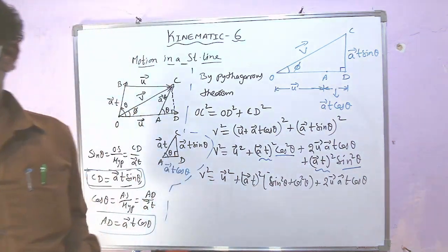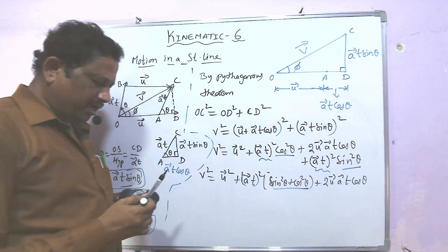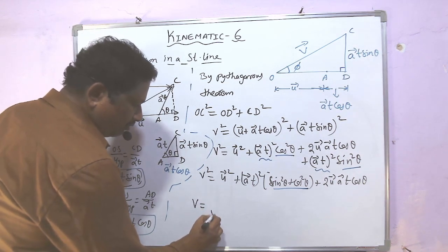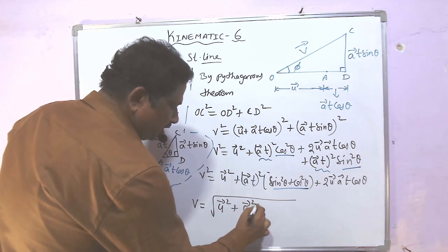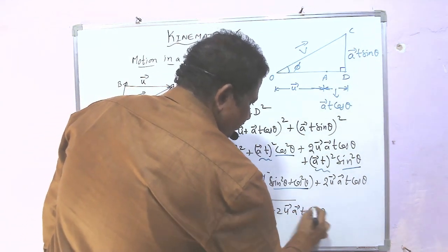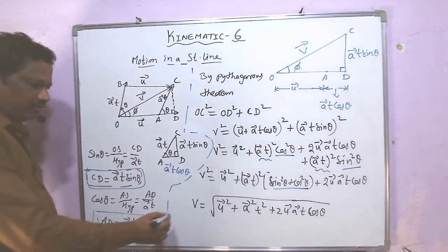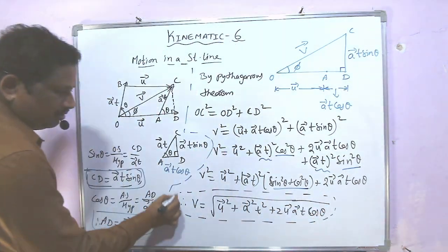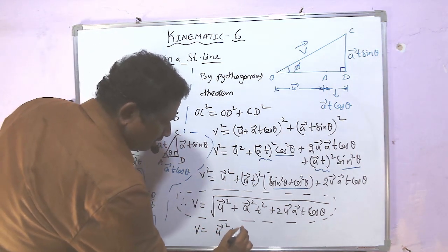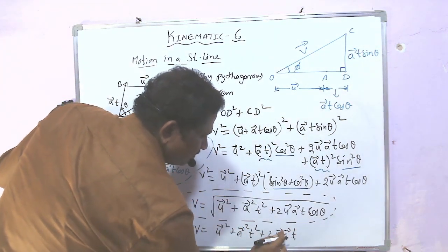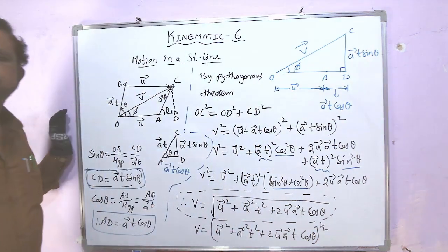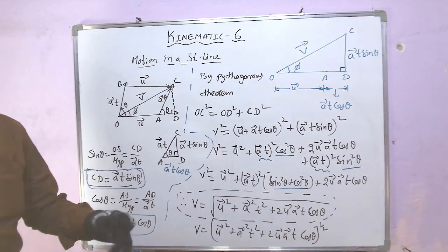Therefore, the final velocity V equals the square root of (Ū² + Ā²·T² + 2·Ū·Ā·T·cos(theta)). This gives the magnitude of the resultant final velocity when velocity and acceleration are not collinear.